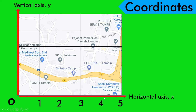Jadi di setiap paksi ni ada nombor rujukan untuk kedudukan: 1, 2, 3, 4 dan 5. Untuk paksi y juga sama — we got 1, 2, 3, 4 and 5. Kalau kita ada peta yang lebih besar, jadi nombor akan lebih besar lagi.